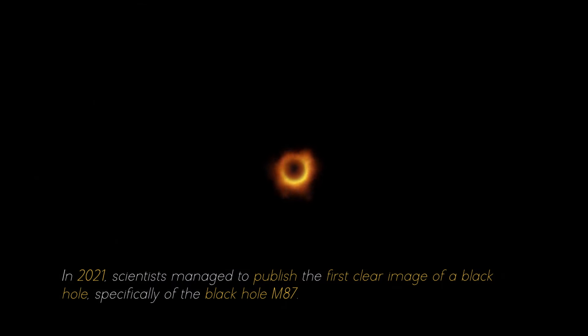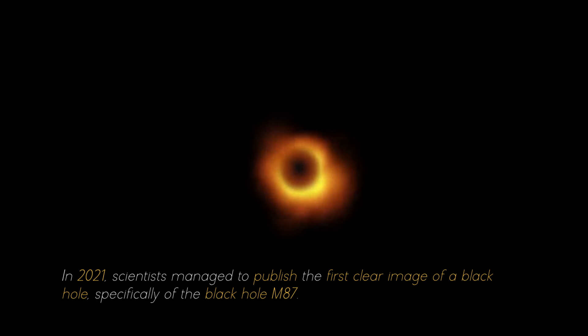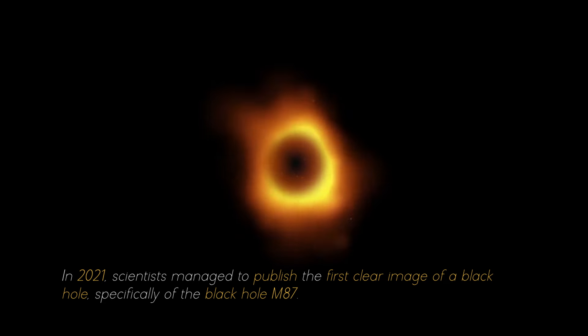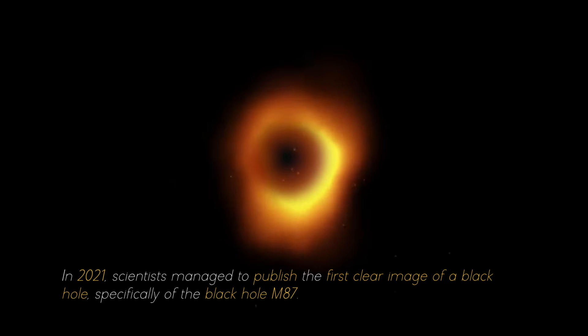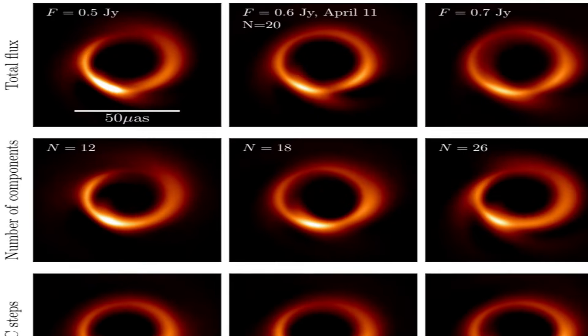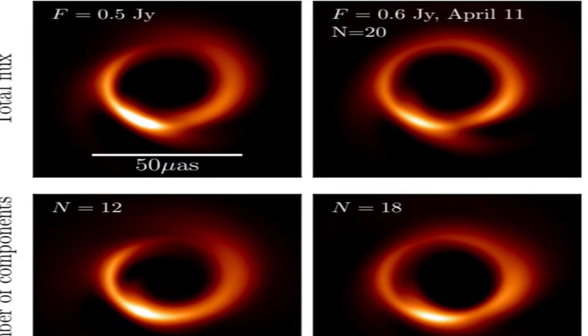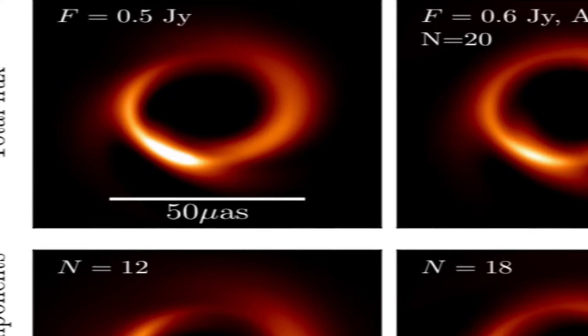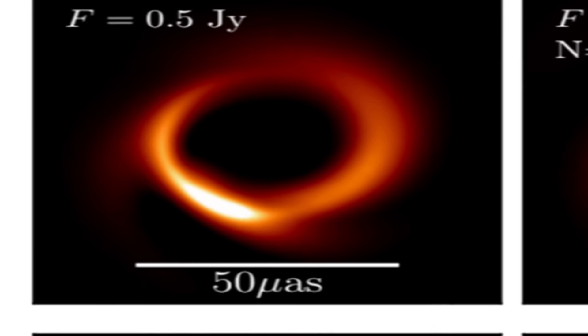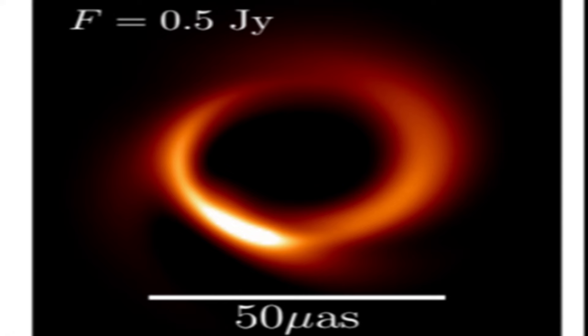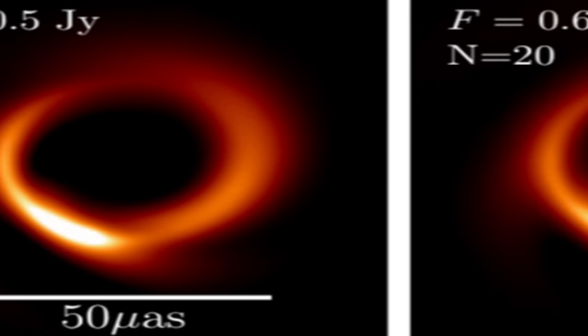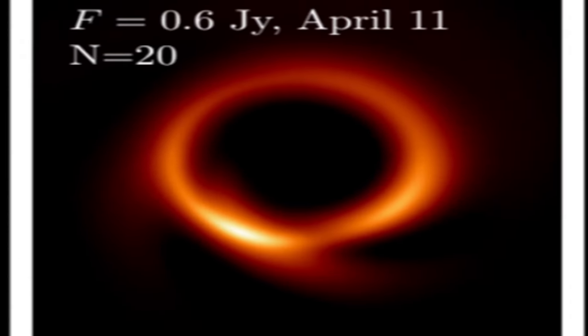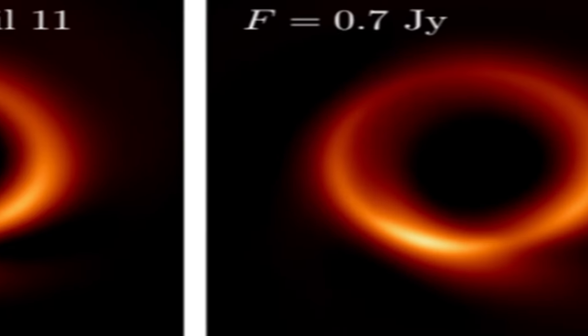In 2021, scientists managed to publish the first killer image of a black hole, specifically of the black hole M87. For several consecutive nights, photographs of the black hole were taken, and with each image researchers collected more evidence about it. It was necessary to combine the individual photographs to obtain a complete image that filled in all the gaps.